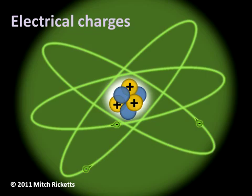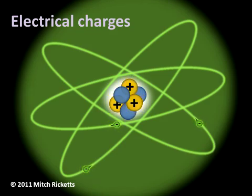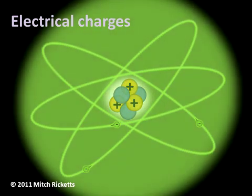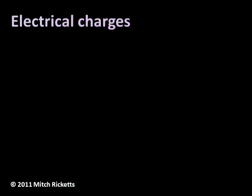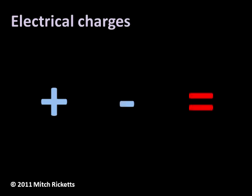Some properties of atoms are related to their electrical charges. Remember that within an atom, protons have positive charges and electrons have negative charges. Entire atoms may also have unbalanced electrical charges. For instance, an atom may have an overall positive charge, an overall negative charge, or it may be electrically neutral.